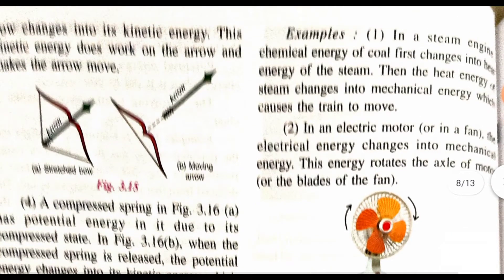First example: in a steam engine, the chemical energy of coal first changes into the heat energy of steam. In the steam engine, we add coal — coal has chemical energy. It converts into heat energy, which produces steam that creates mechanical energy, and the train starts running. So chemical energy converts to heat energy, and because of the heat energy, the train moves.